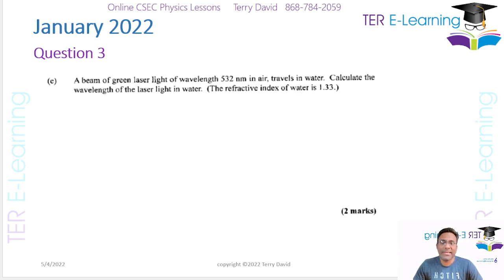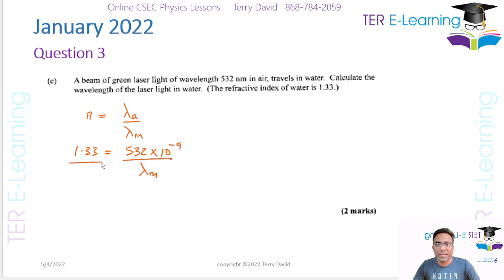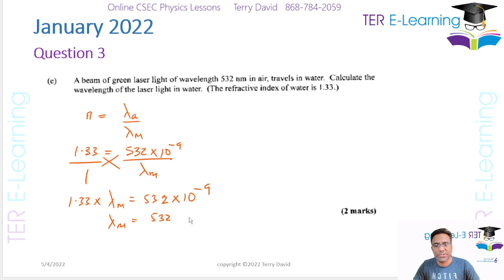A beam of green laser light of wavelength 532 nanometers in air travels in water — calculate the wavelength. We know n equals λa over λm, so 1.33 equals 532 times 10 to the minus 9 over λm. Cross-multiplying gives 1.33 times λm equals 532 times 10 to the minus 9.